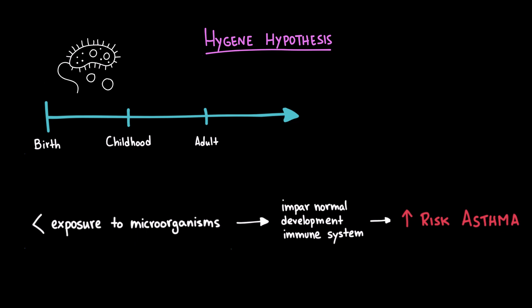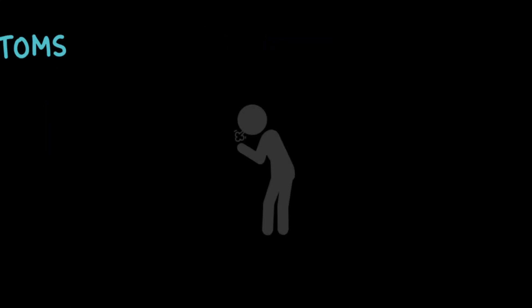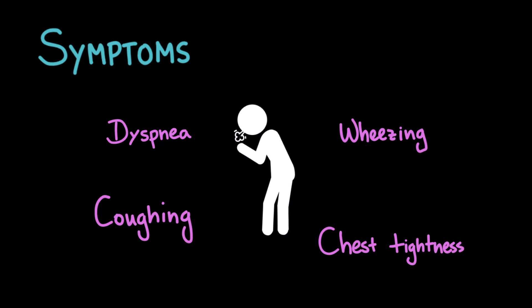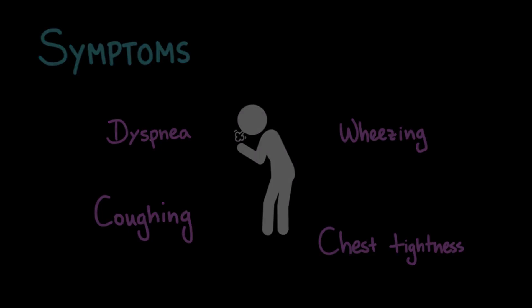During an asthma episode, patients may experience dyspnea, meaning shortness of breath, wheezing during exhalation, experience chest tightness, or a persistent cough that often worsens at night or in the early morning. Some attacks are mild and resolve quickly, while others can be severe and even life-threatening, requiring immediate medical treatment.